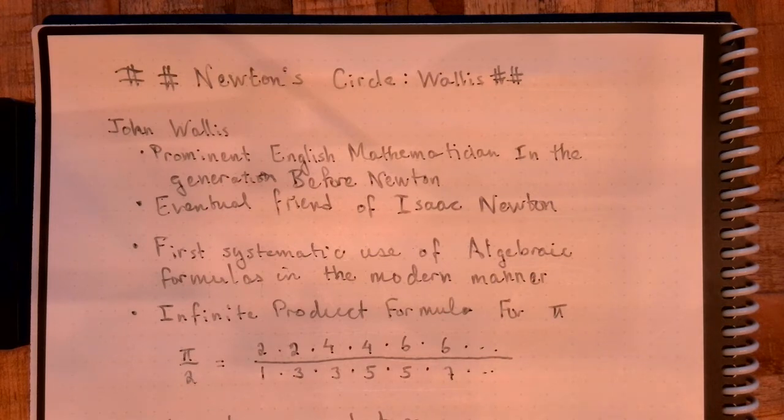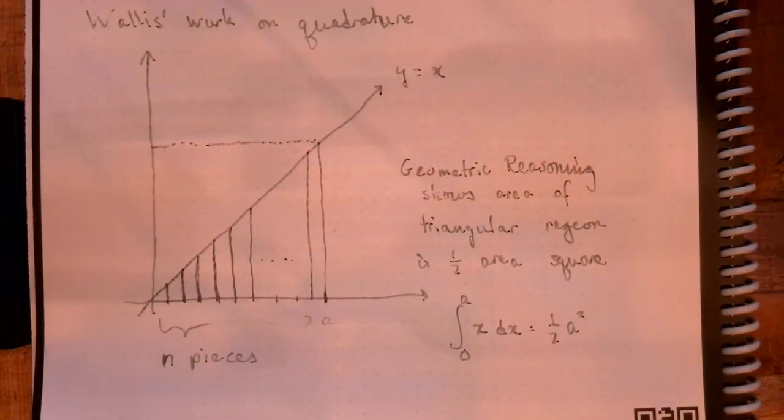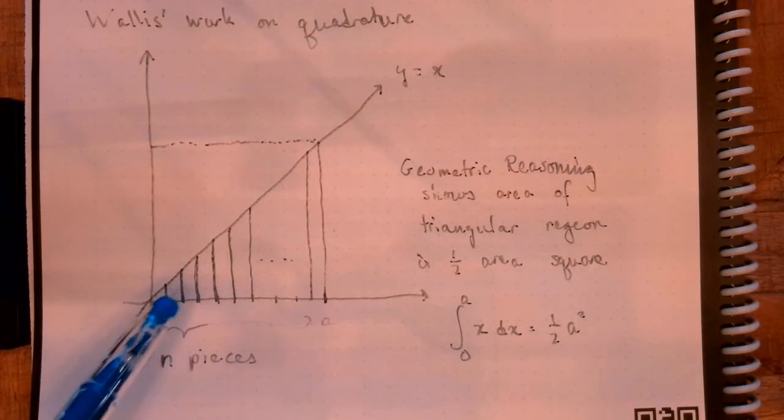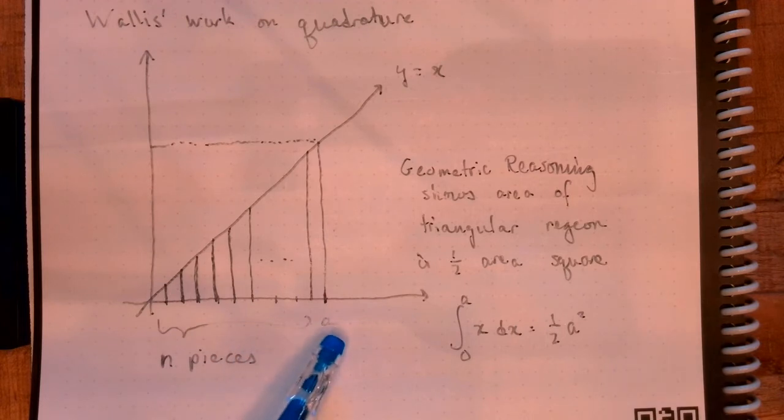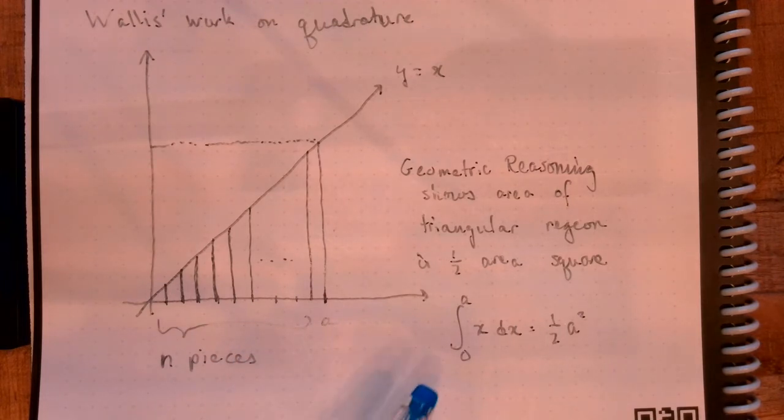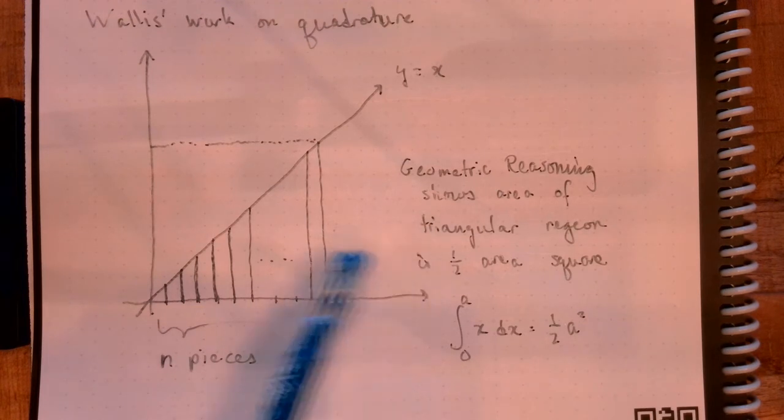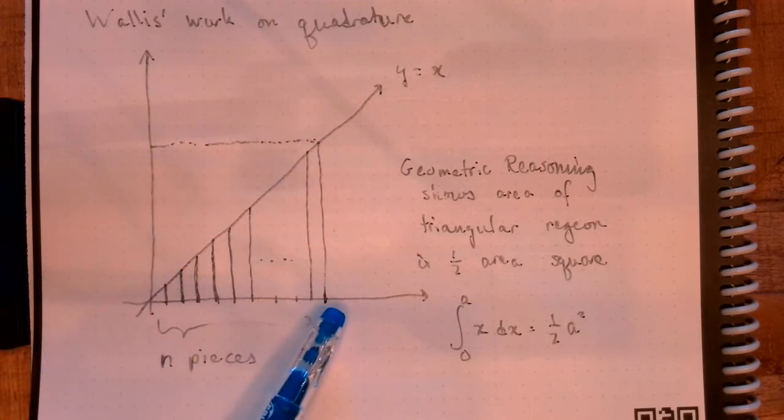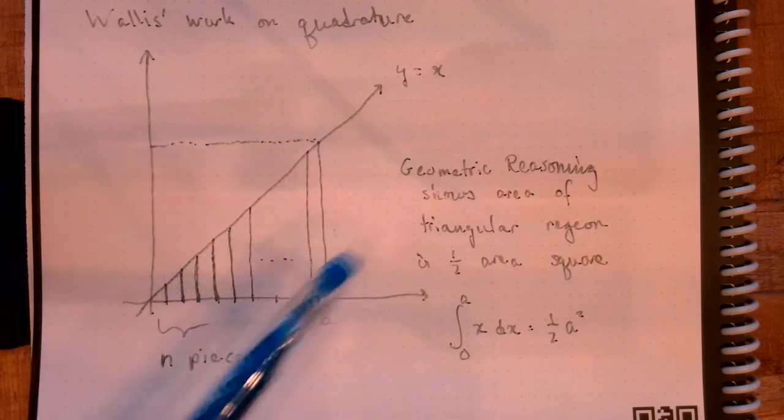What I want to talk about in this video is Wallis's approach to quadrature, or finding areas. We're looking at Wallis's work on quadrature. Remember, quadrature is about finding the area of something. Let's just go with a very simple case here. We're finding the area under y equals x, from x equals 0 to x equals a. Now, of course, this is a triangle. Based on elementary geometry, we can see that the area of that triangle should be one half of the area of the square region. In other words, that's saying that the integral from 0 to a of x dx should be one half a squared, because the area of the square is a squared, and the area of the triangle should be one half of that.